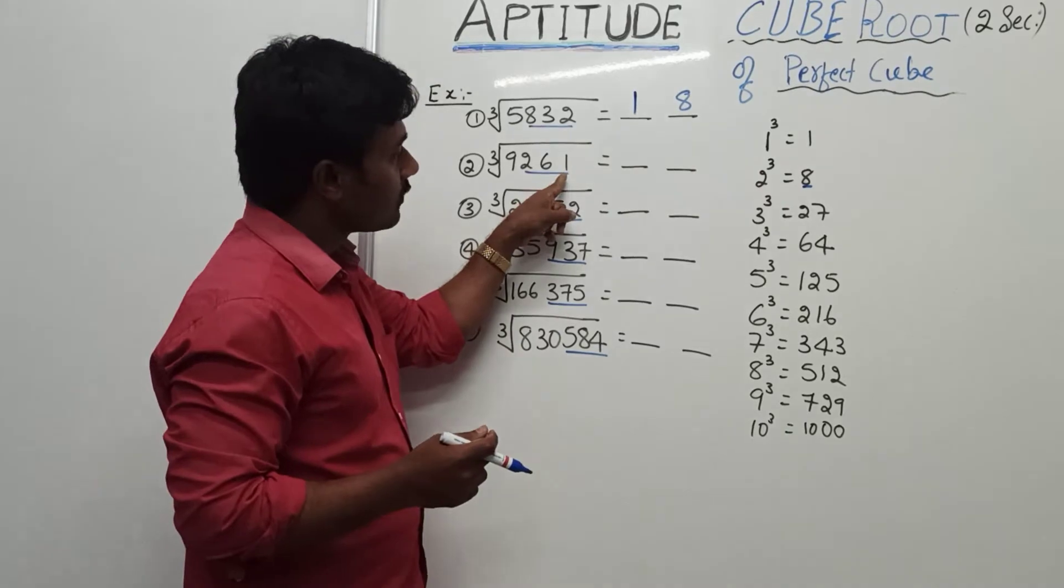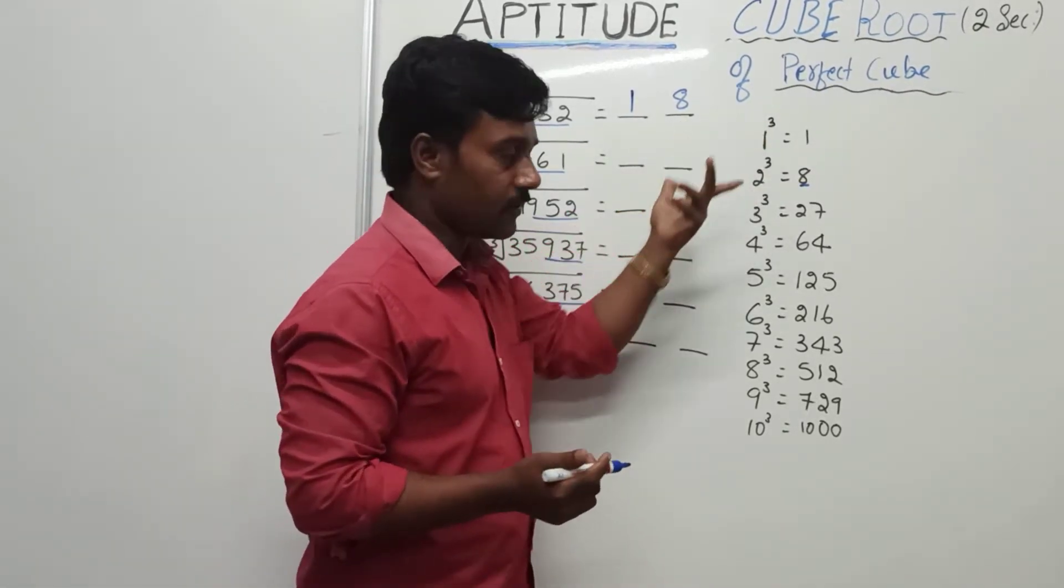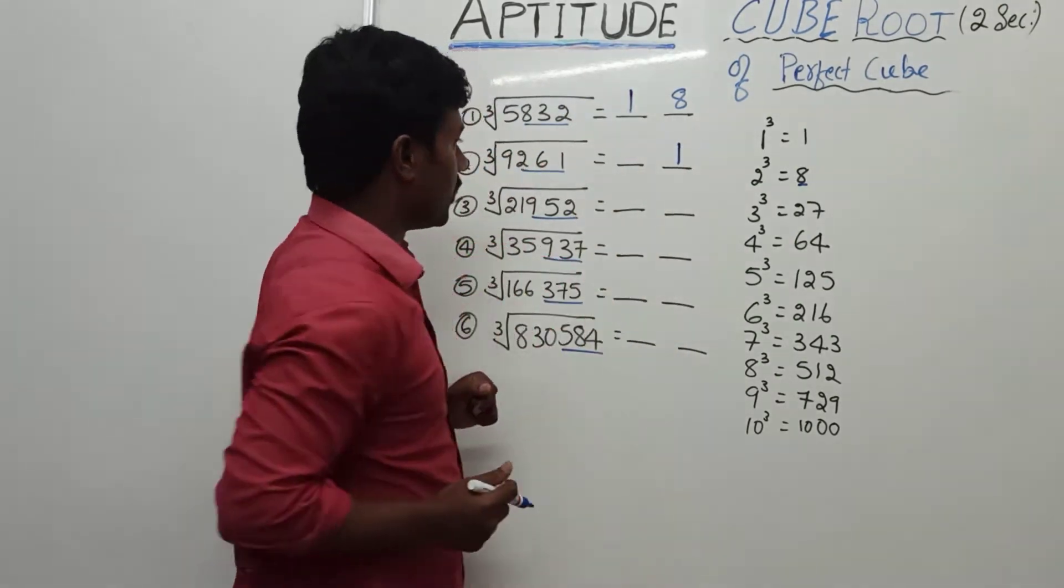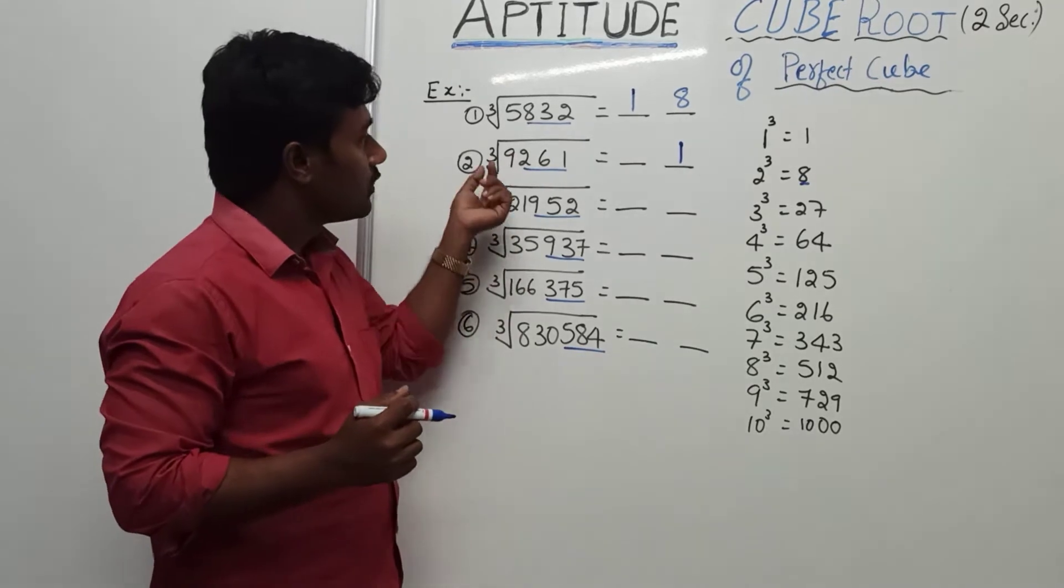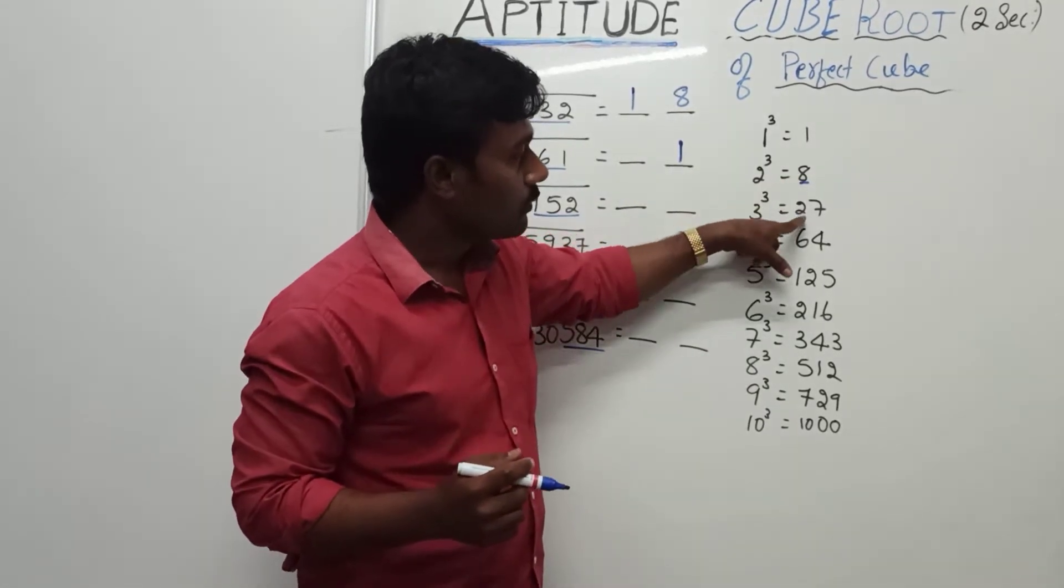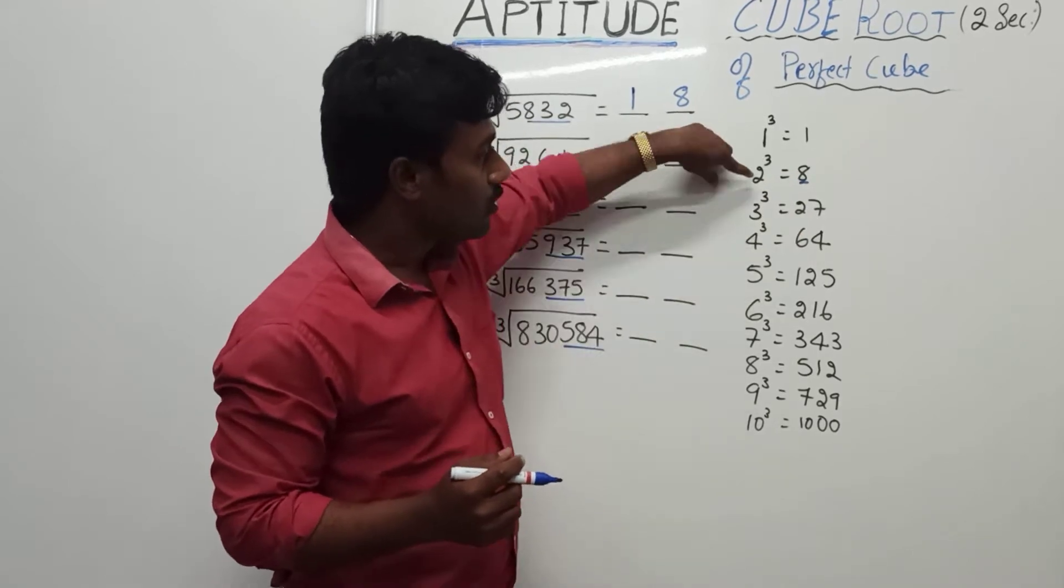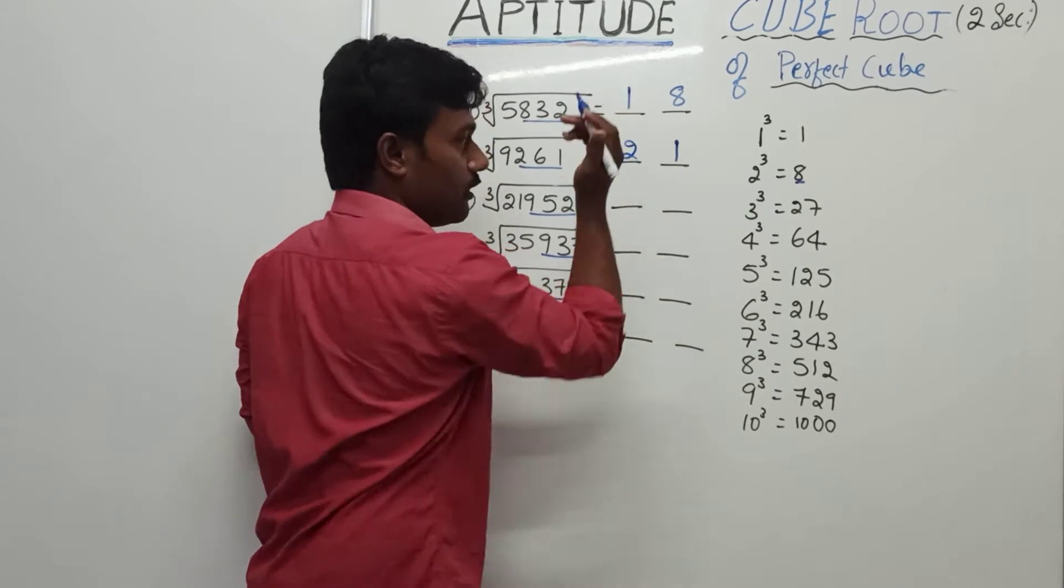Very simple. Then here, 1 cube. Cube of 1 is 1 itself, write in the unit case. And come to the last unit, first unit, first digit, 9. So 9 lies between 2 cube and 3 cube, between 8 and 27. What is the minimum base? 2. We need to consider this, 21.